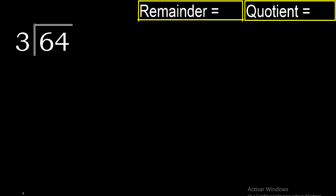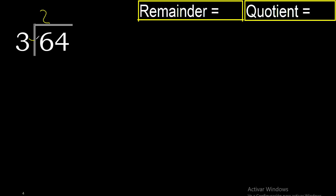64 divided by 3. 6 is not less than 3, therefore we work with 6. 3 multiplied by 3 is 9 — excessive. 3 multiplied by 2 is 6, and 6 is the closest.